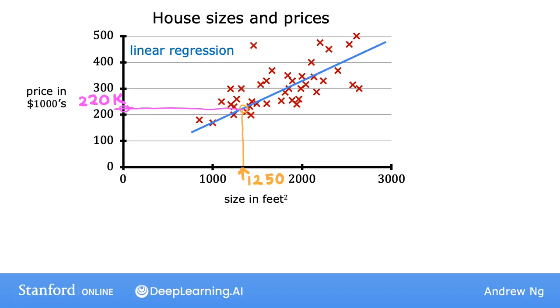So this is an example of what's called a supervised learning model. We call this supervised learning because you are first training your model by giving it data that has the right answers. Because you give the model examples of houses with both the size of the house, as well as the price that the model should predict for each house. The prices, that is the right answers, are given for every house in the dataset.